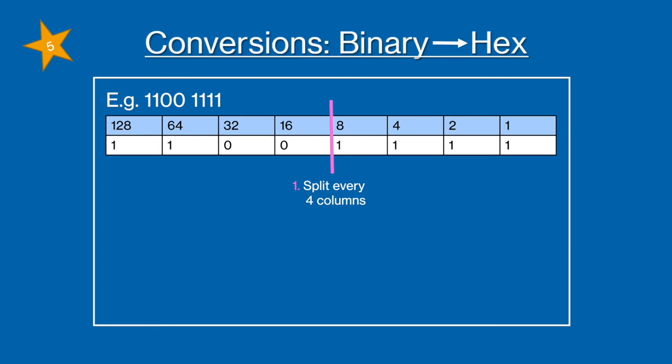Then for our first step we're going to split every four columns. Next we're going to take the right hand chunk of columns and we're going to add the values where there are ones. So we're going to do 8 plus 4 plus 2 plus 1 to give us 15. And 15 is F in hexadecimal.